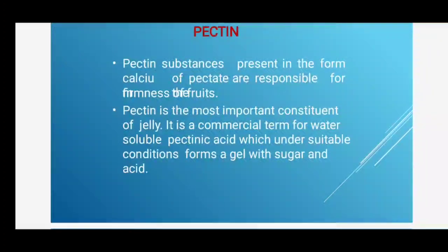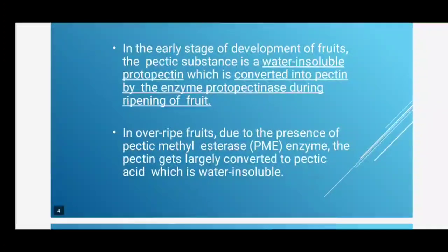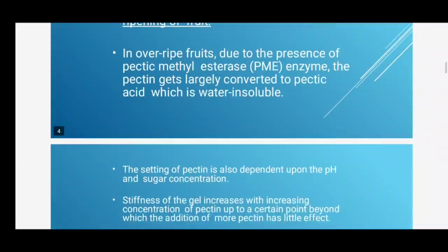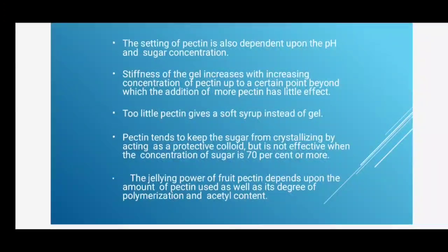During ripening, in over-ripe fruits, the enzyme pectin methyl esterase largely converts pectin to pectic acid, which is water-insoluble. This is why both immature and over-ripe fruits are not suitable for making jelly — only ripe fruits are used. The setting of pectin also depends on pH and sugar concentration; stiffness of the gel increases with increasing pectin concentration up to a certain point, beyond which more pectin has little effect. Too little pectin gives a soft syrup instead of a gel.